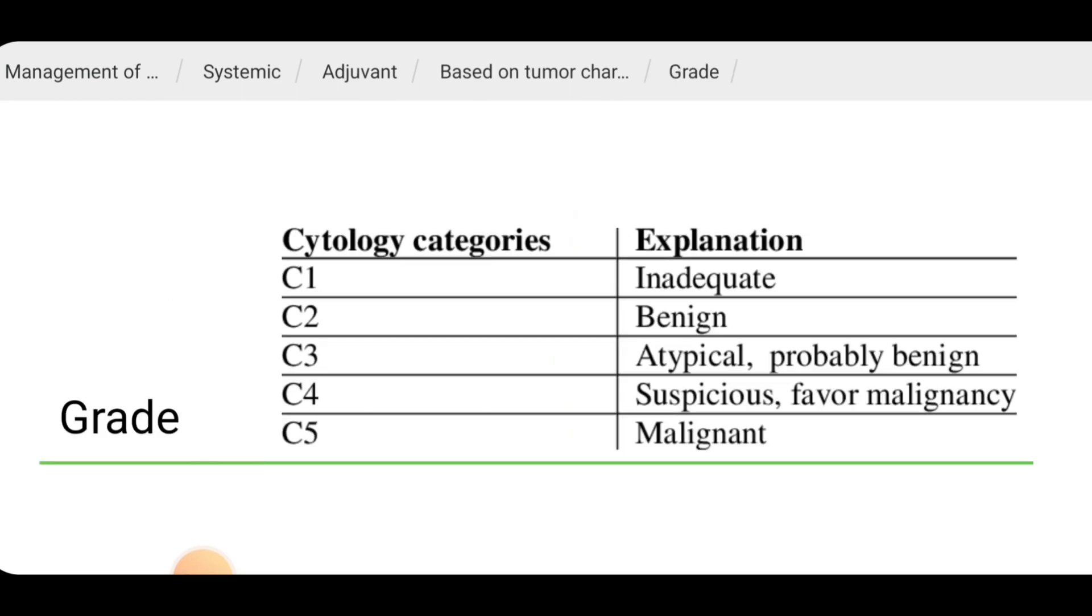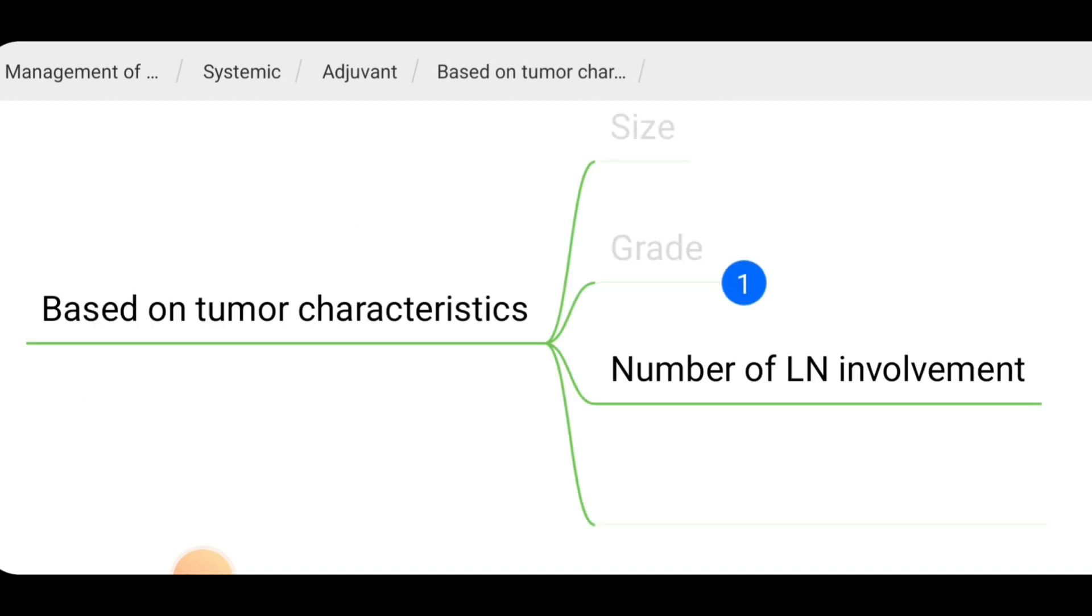The grade is usually categorized from C1 to C5, where C1 is an inadequate sample for assessment, C2 is benign, and C5 is malignant, making C3 and C4 in between. Also, the number of lymph node involvement and estrogen, progesterone, and HER2 positivity is considered.